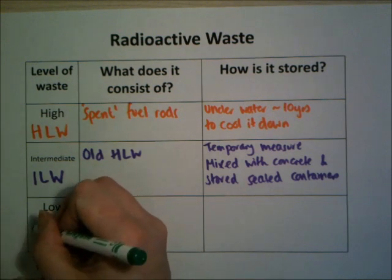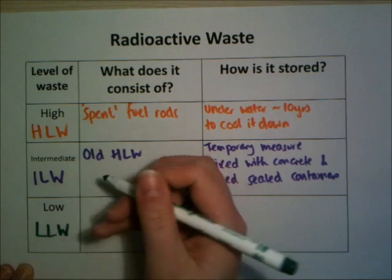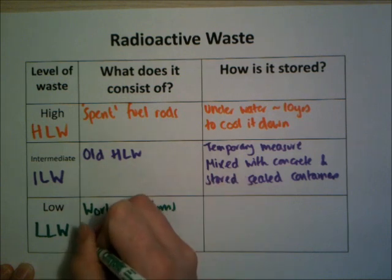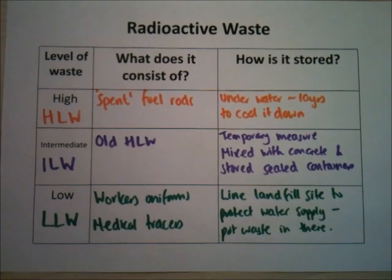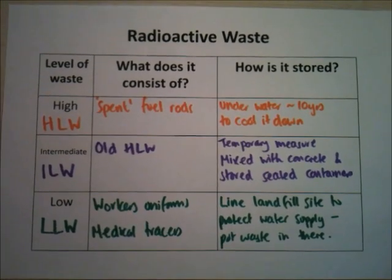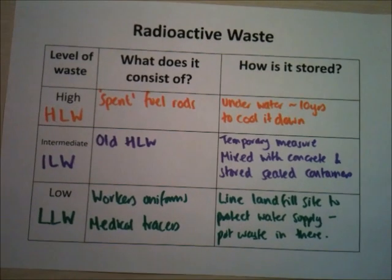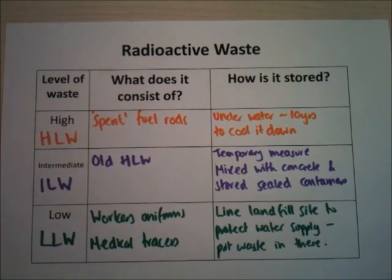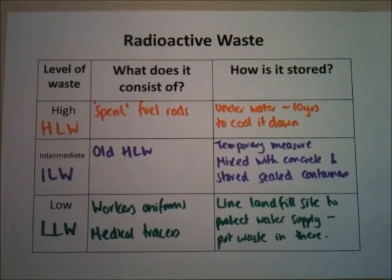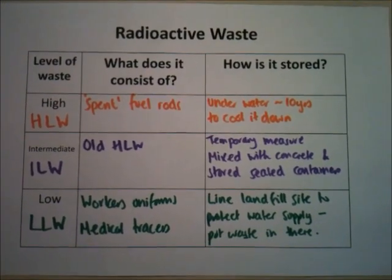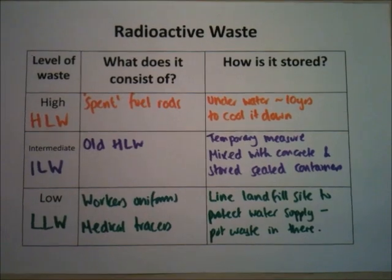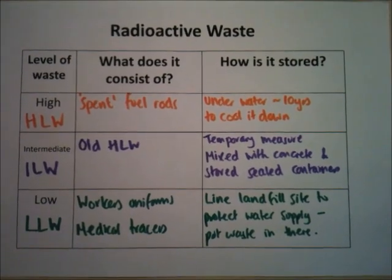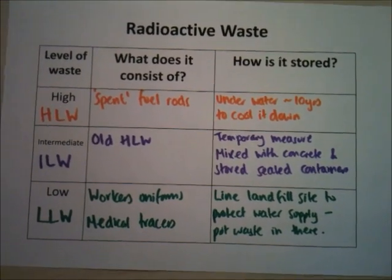Low-level waste (LLW) is the easiest to deal with — it's mainly workers' uniforms and medical tracers. It's stored in lined landfill sites with a waterproof plastic lining. The waste is placed in there where it can be tracked, ensuring that any radioactivity can't seep into the water supply and make it radioactive, which would be really dangerous for the environment and general health.